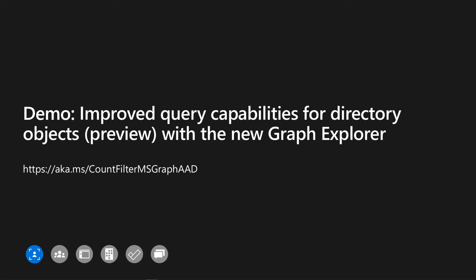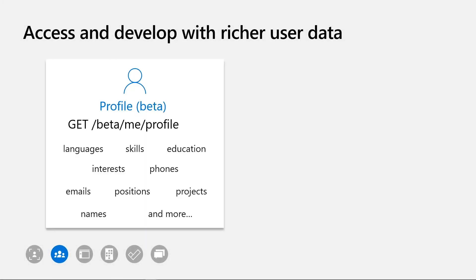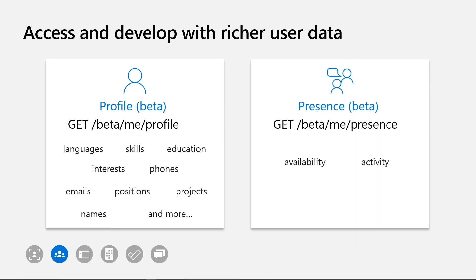Now that we've covered new ways to manage who and what has access to your organization's data, I'm going to highlight new features and APIs that enable you to do more with this data and maximize productivity. Users are at the center of all data on Microsoft Graph. The Profile API is currently in preview, and it allows you to add and retrieve descriptive properties such as languages, skills, education, and more for a person — these properties are surfaced in shared people experiences across Microsoft 365. We also have a new Presence API, which gives you information about a user's Microsoft Teams presence: availability such as available, away, or busy, and activity such as if they're in a meeting or out of office.